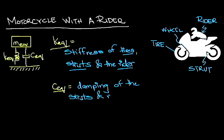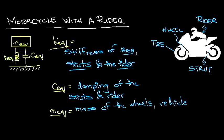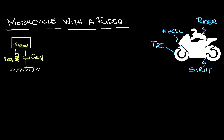C equivalent includes the damping of the strut and the rider. The equivalent mass includes the masses of wheels, vehicle body, and the rider.